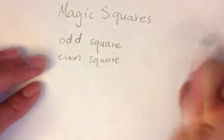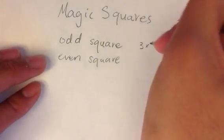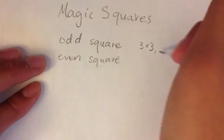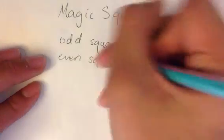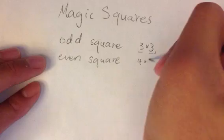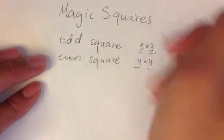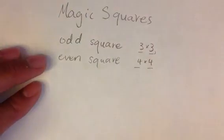An odd square would be something like 3x3. Even squares would be like 4x4. So first off, let's solve an odd square - the easiest one, a 3x3.